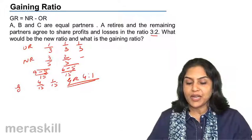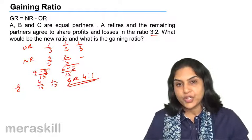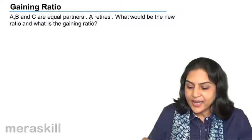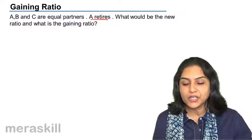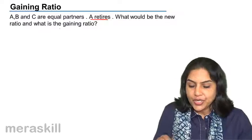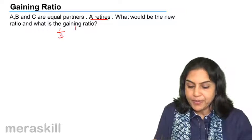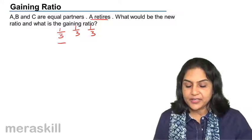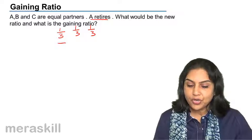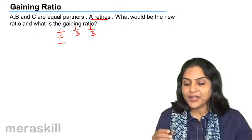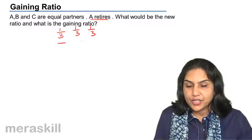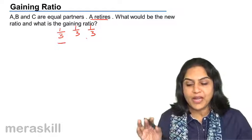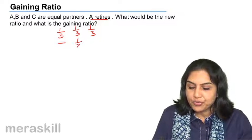The gaining ratio between B and C is 4 is to 1. Now consider another case: A, B and C are equal partners and A retires. What would be the new ratio and what is the gaining ratio? If they are equal partners, the old ratio is 1 by 3, 1 by 3 and 1 by 3. A retires. If nothing is mentioned, the new ratio will be the same as the old ratio between the remaining partners. Therefore, it will be equal.